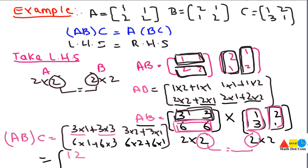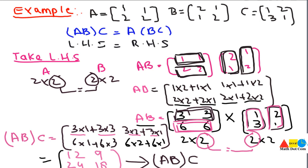Continuing: 6×1=6 and 6×3=18, so 18+6=24. And 6×2=12, plus 6×1=6, so 12+6=18. So (AB)C = [12,9; 24,18]. This is the result of multiplying AB and C together. This is how you can multiply three matrices together.